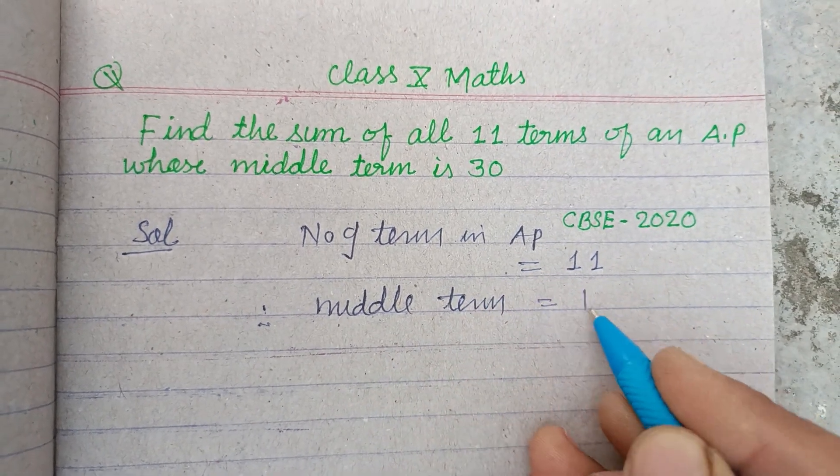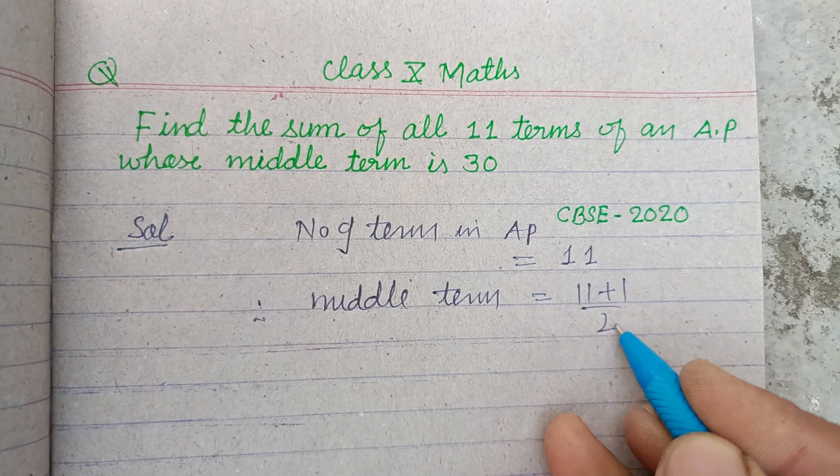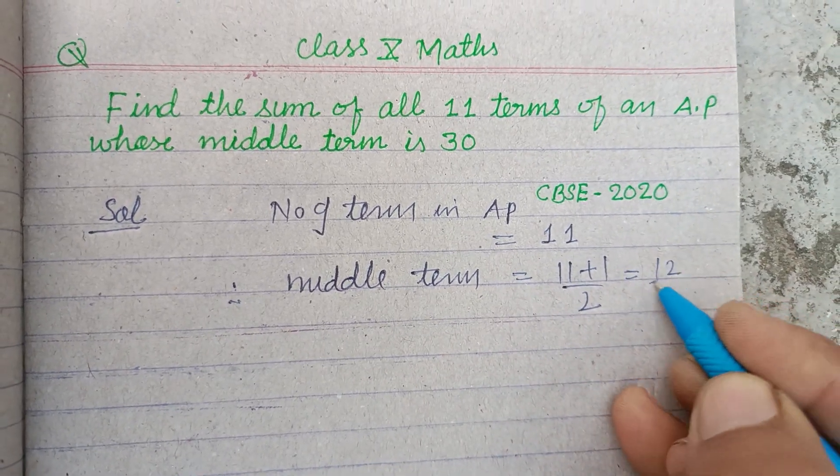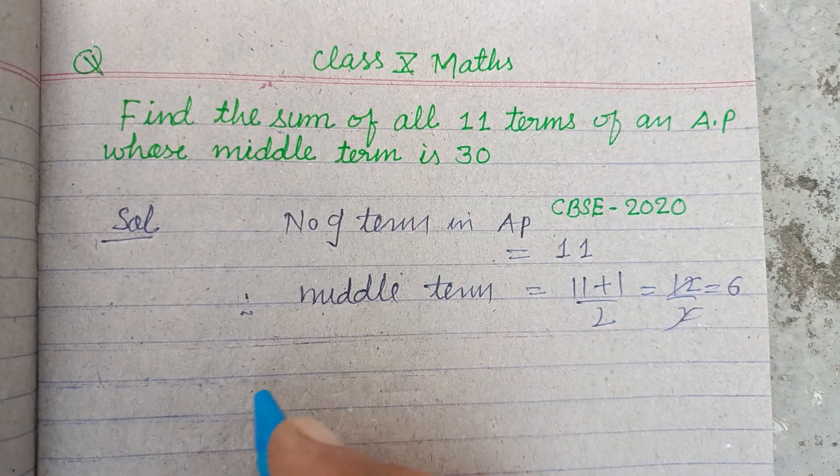The middle term will be (11 + 1) / 2, which is 12 / 2, which is 6. So the 6th term is the middle term.